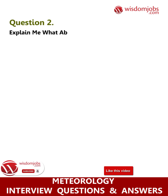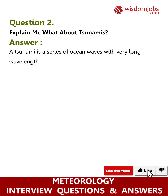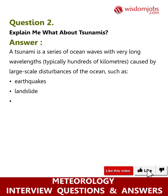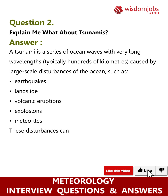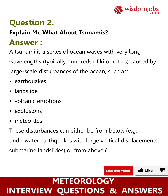Question 2: What about tsunamis? A tsunami is a series of ocean waves with very long wavelengths, typically hundreds of kilometers, caused by large-scale disturbances of the ocean such as earthquakes, landslides, volcanic eruptions, explosions, or meteorites. These disturbances can either be from below, e.g., underwater earthquakes with large vertical displacements or submarine landslides, or from above, e.g., meteorite impact.